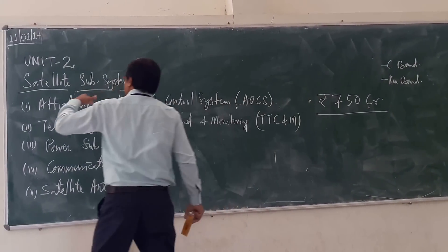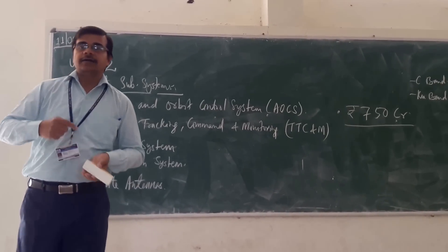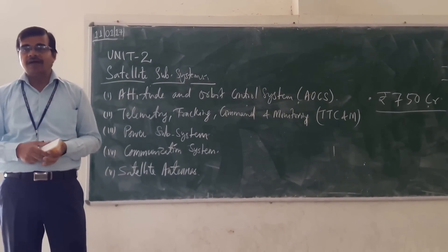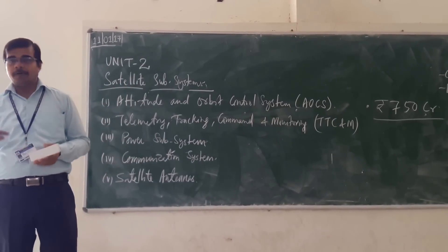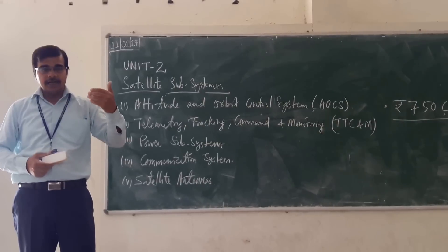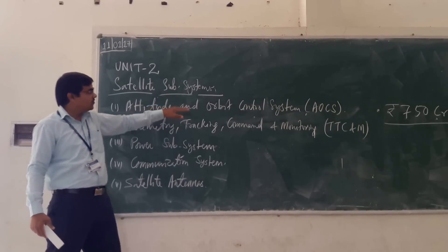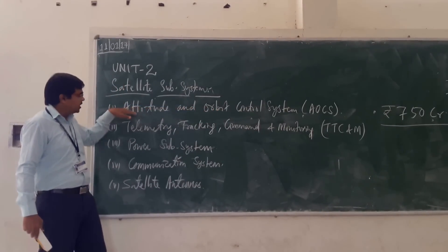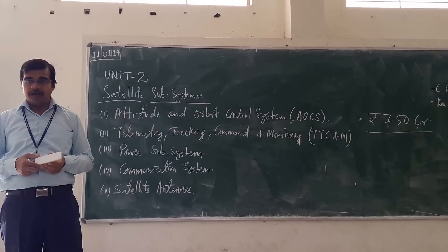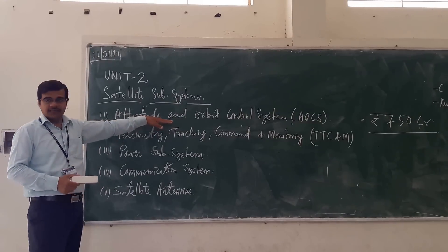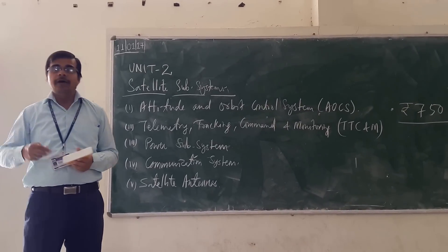In your satellite subsystem, you are having the attitude and orbit control system. Attitude means the satellite is following its orbit — it will have an elliptical orbit that it has to follow. But it may be possible that because of external forces, the satellite may divert from its original orbit. So we have to consider whether it is following the orbit or not — that is the attitude and orbit control system. If it is diverted from its orbit, we have to control it so that the satellite stays in its orbit and is not affected by external forces.